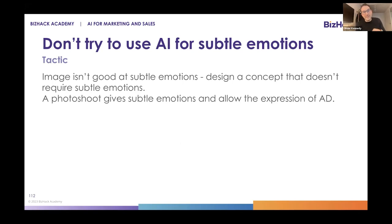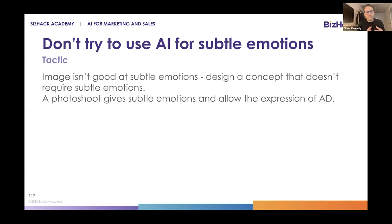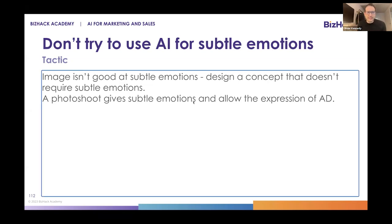Everything I'm giving you today is current — maybe in two weeks, a month, or even 24 hours some of this will change. Today we cannot use AI for subtle emotion. Every time we do an advertising concept where we need very subtle emotion from the models, we have to go to a photo shoot, because we've found no way to prompt any of those tools to give subtle emotion. They're always very neutral, or if you try to imagine an emotion they go far too extreme — scared, happy — there aren't those subtle, light nuances.